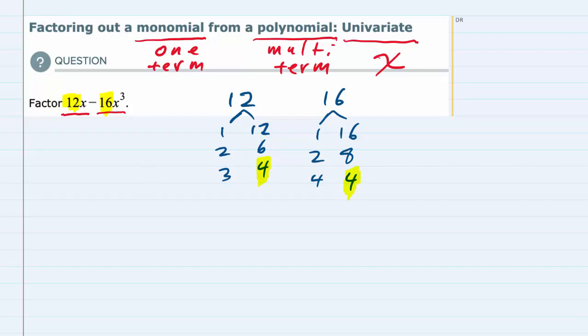So that tells me I should be able to factor out a 4 from both terms, but I also need to look at the variables. Here we have a single x in the first term and three x's, x cubed, in the second term. So if the first term has one x and the second term has three x's, the largest number they have in common is just a single x. They both have at least one x, so I can factor out an x.